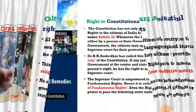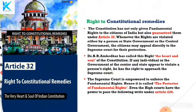The last right is right to constitutional remedies. The constitution has not only given fundamental rights but also guaranteed them under article number 32. Whenever rights are violated either by a person, state, or central government, the citizen may appeal directly to the Supreme Court for their protection. This right is also known as the protector of fundamental rights. Dr. B.R. Ambedkar has called this right the heart and soul of the constitution. The High Court also has the power to pass writs under article number 226. Writs means written notices against those who are violating the rights.